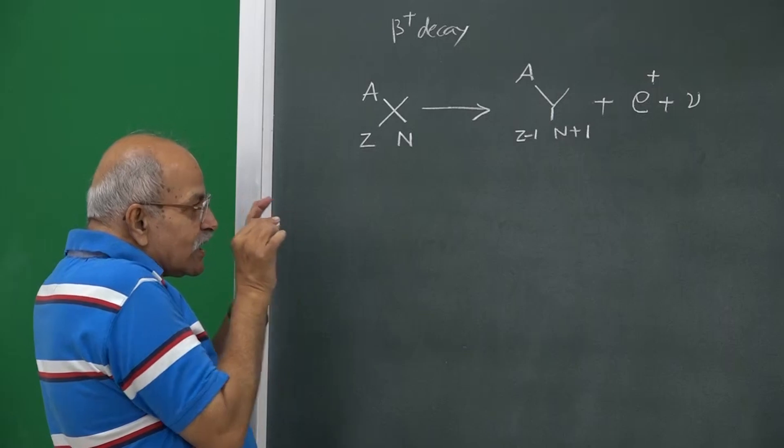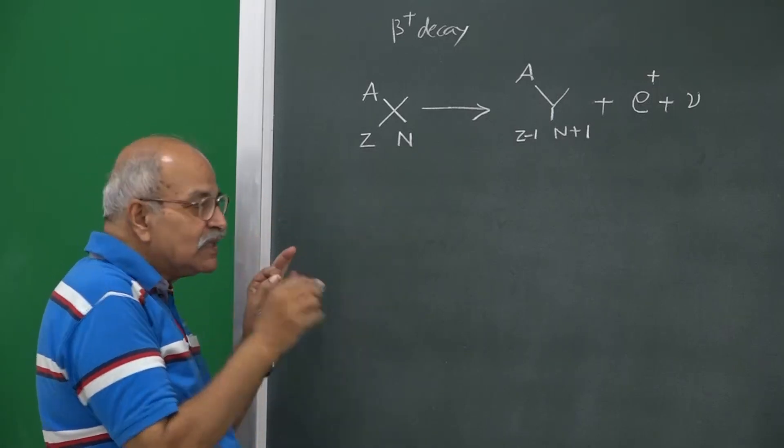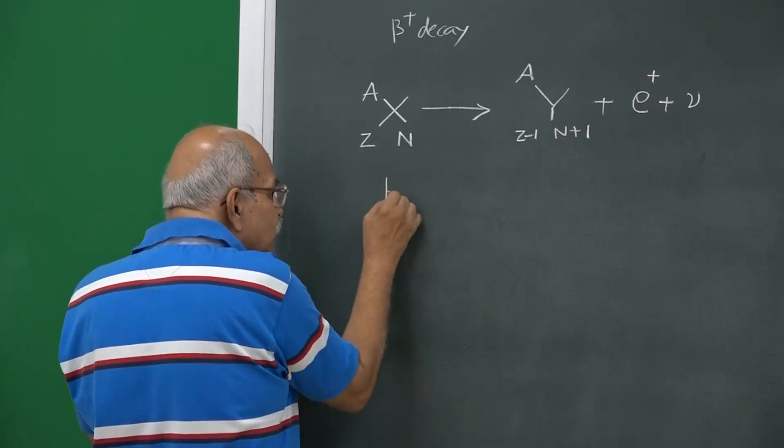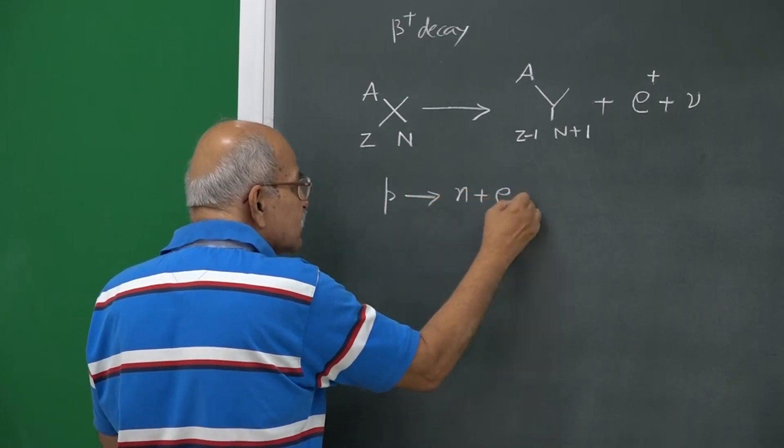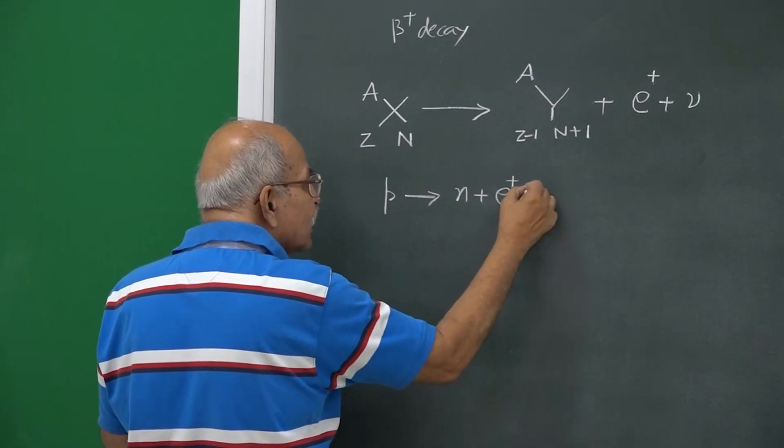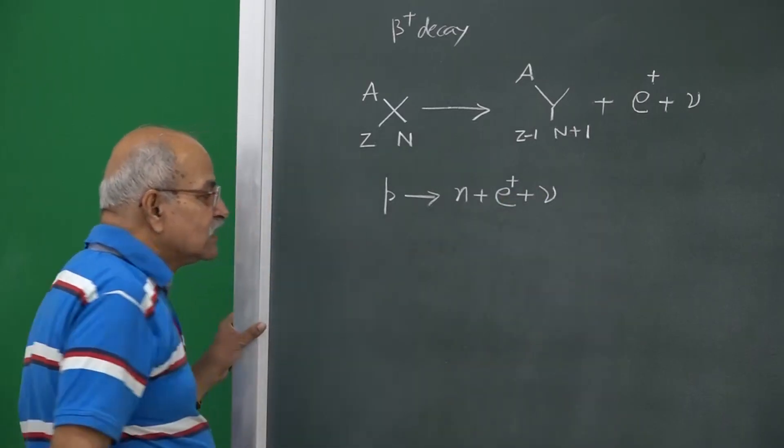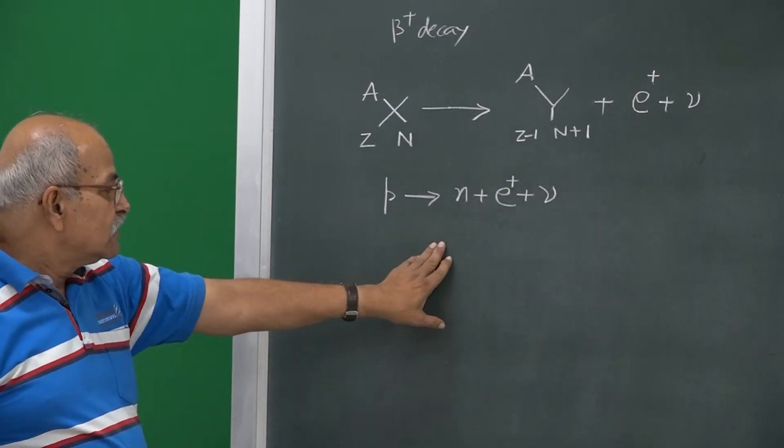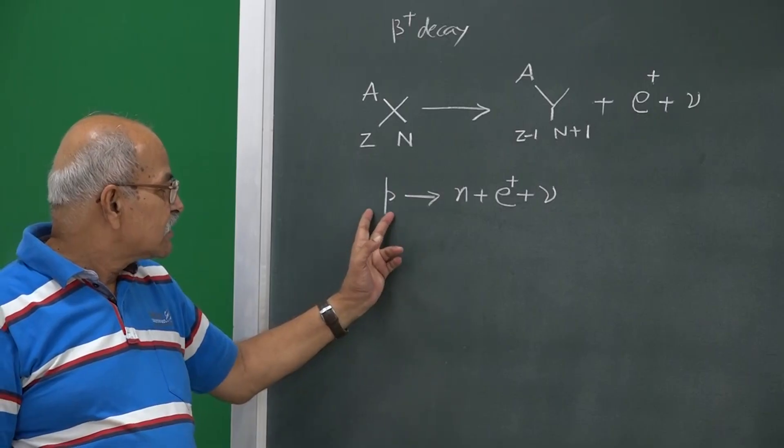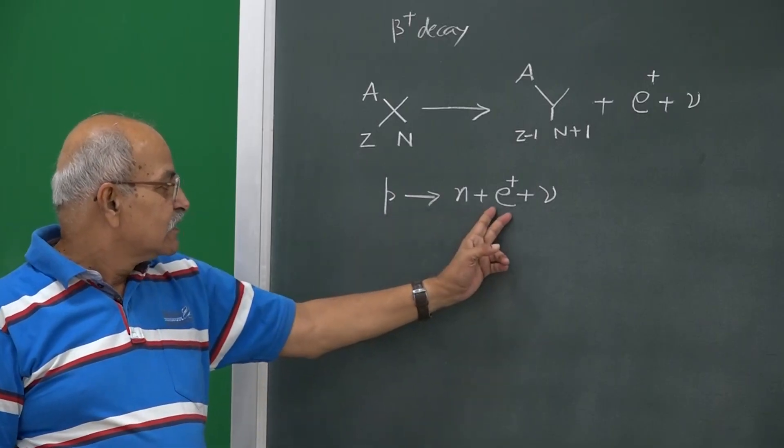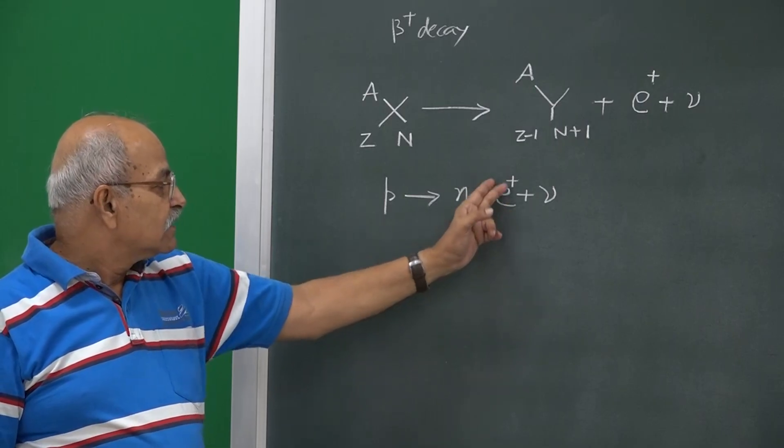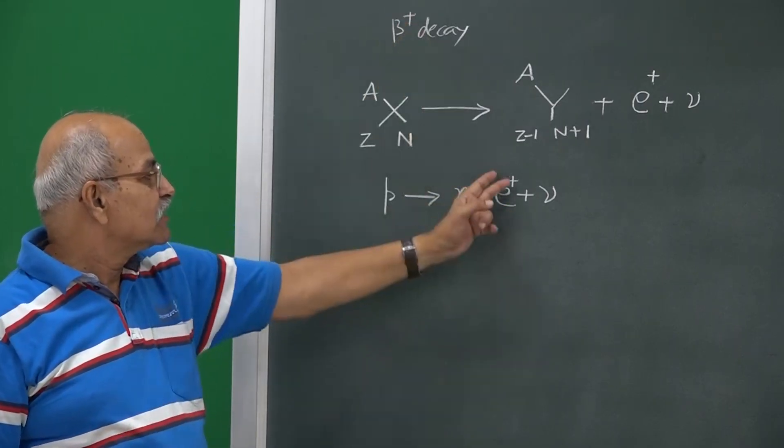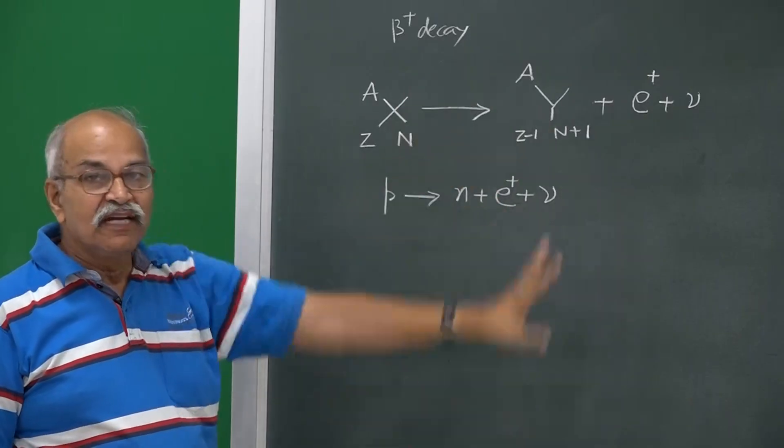If you just look at that proton only, you can write that proton has been converted into neutron plus this positron and plus this neutrino. The charge should be conserved, therefore you have a plus charge here, so you need a plus charge here. Neutron does not have a charge, so it has to be positron and that is why it is called beta plus decay, because there is a positive charge which is coming out.